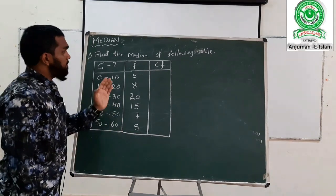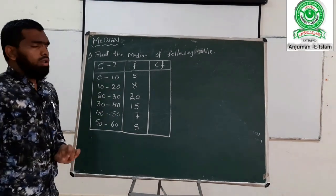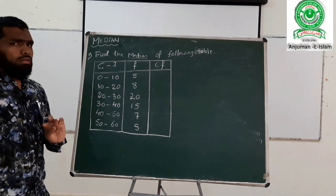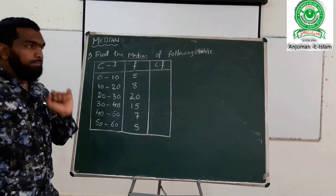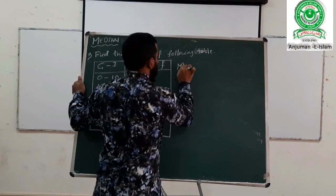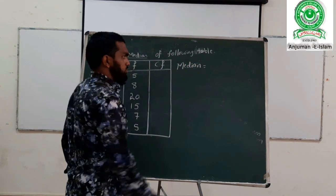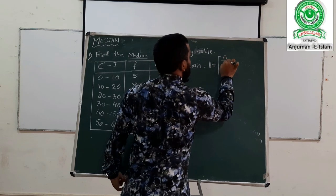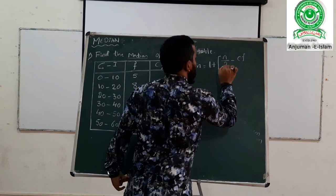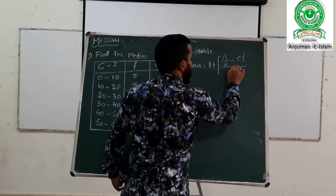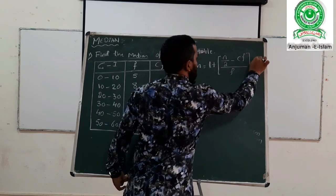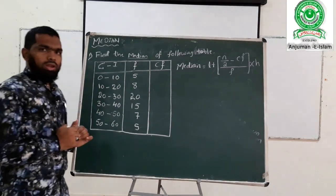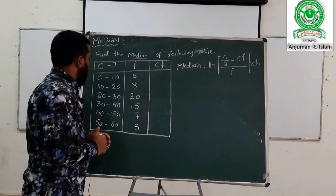So, how do we find the cumulative frequency? First of all, when the question says find the median, we have to write down the formula of median. The formula of median is: Median = L + (N/2 − CF) / F × H.